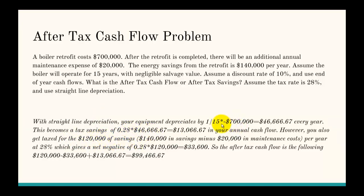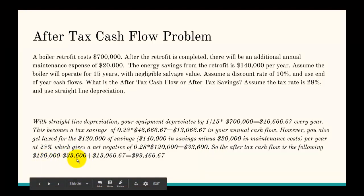To calculate: first, find how much the equipment depreciates per year by taking one divided by the years times the equipment cost, which is about $47,000 per year. Multiply that by the tax rate — that gives roughly $13,000 in annual cash flow savings from depreciation. But you get taxed on the $120,000 of savings every year, giving a tax hit of $33,600 (28% × $120,000). So while you're still saving $120,000 every year, you subtract the $33,600 tax hit and add back the $13,000 depreciation benefit, bringing after-tax savings to approximately $99,467 per year.